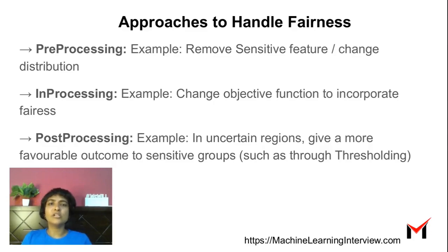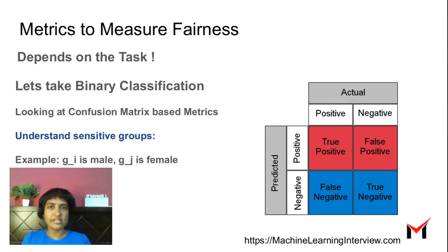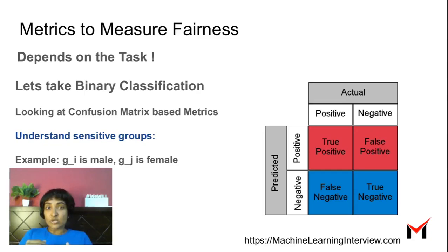How do we figure out if our models are being fair? There are many metrics to measure fairness and it really depends on the task. Classification could have a different set of metrics, as would regression, as would clustering, and different algorithms have different kinds of metrics. Let's look at binary classification, a very popular paradigm, and look at some metrics based on the confusion matrix — these are probably the simplest possible metrics you can look at.